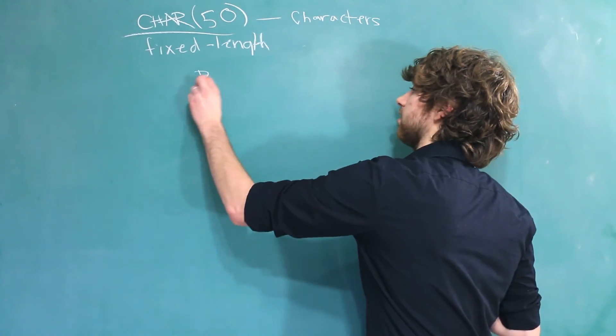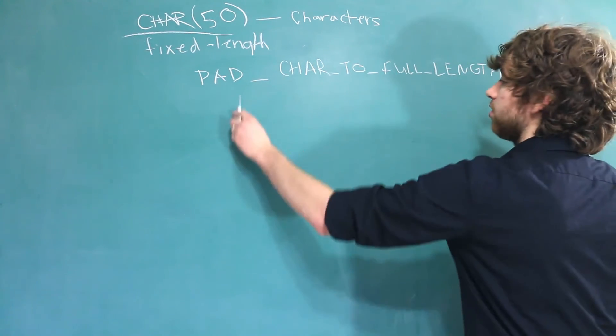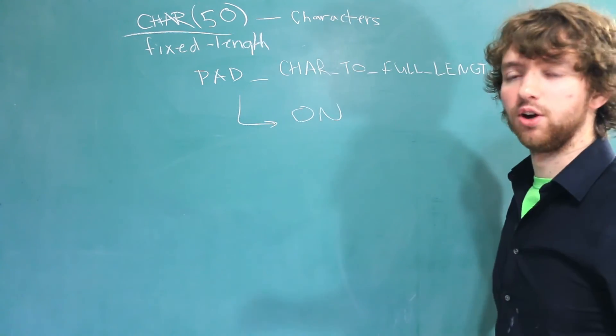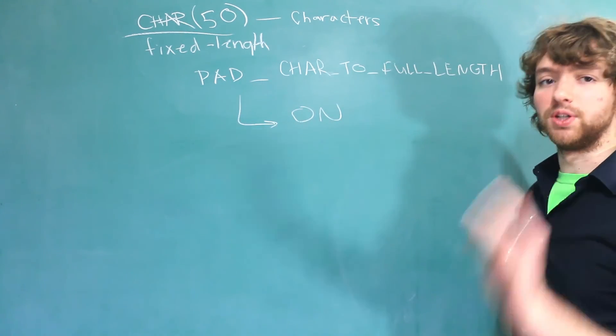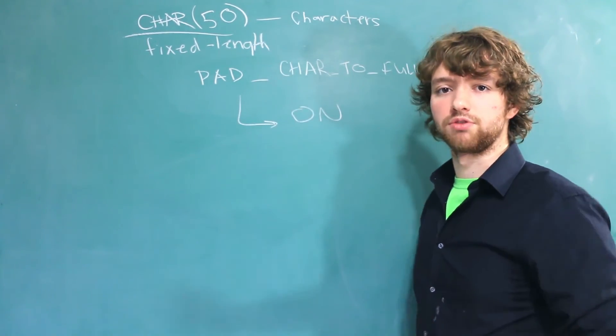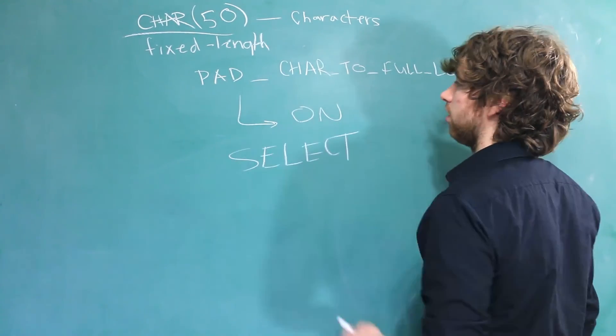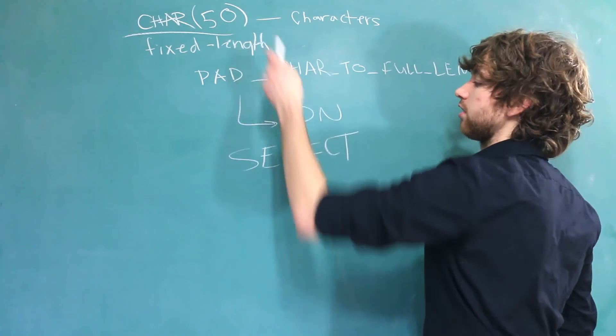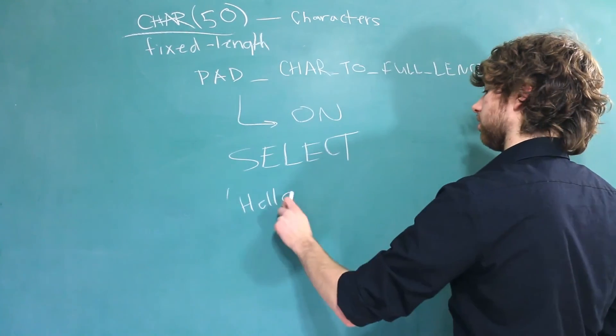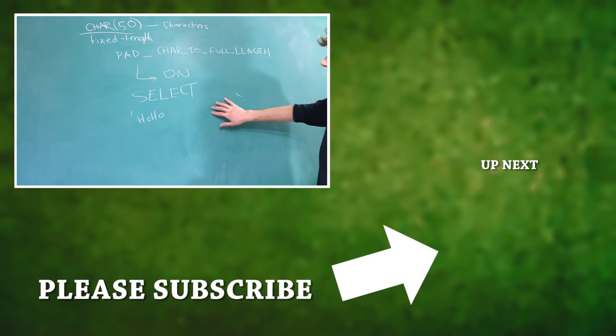And one of those is pad char to full length. It's a pretty long name. But you can actually turn this on. And I'm not going to discuss how to do that in this video. If you want to know you can look it up on the internet. But when this is turned on MySQL is no longer going to strip those spaces out when it's returned. So if you do a select statement on a column of 50 characters and it only has 5 in there, it'll look something like this. And you can see that space.